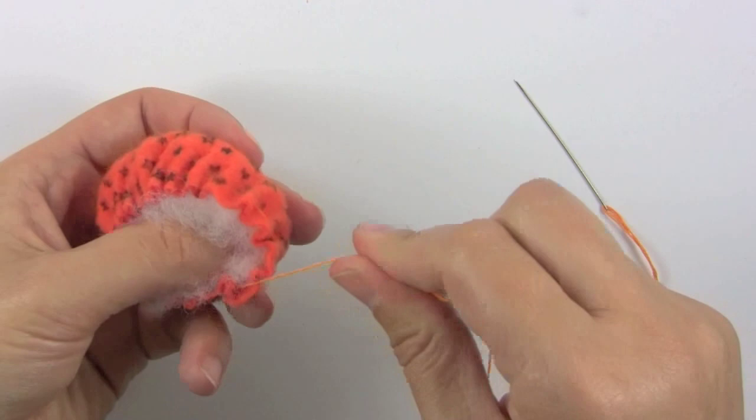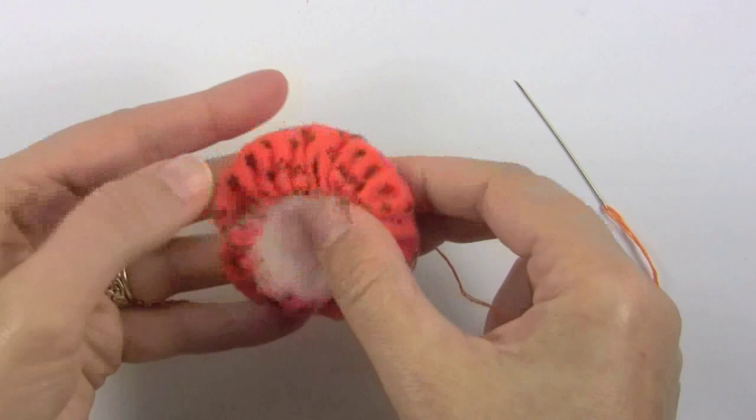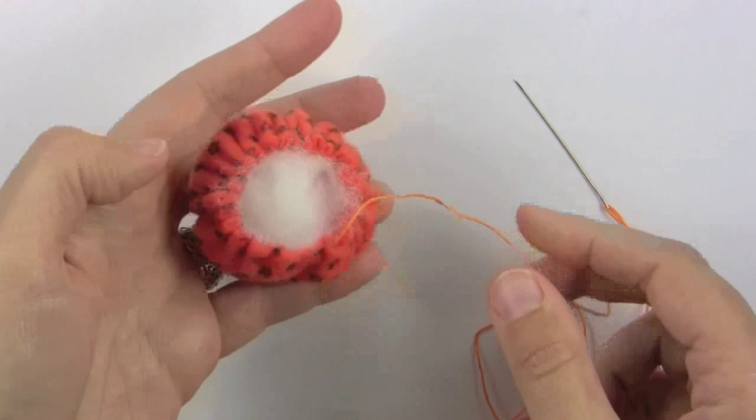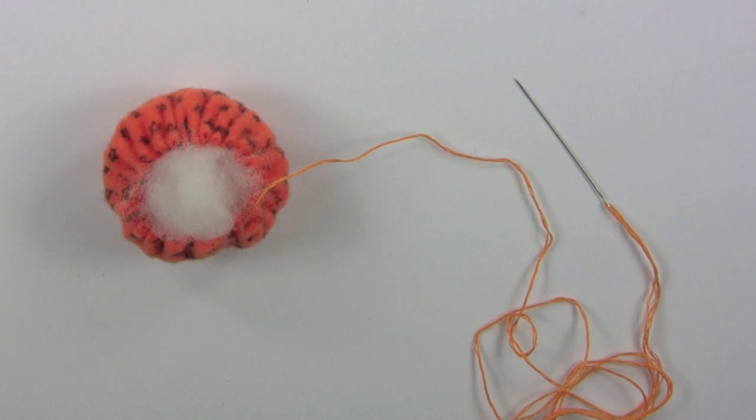What you're going to do is gently tug on the thread. I like to keep my thumb kind of pushed in there on this polyfill. I'm going to add some more in there, but you just keep filling and then gently tugging. I'm going to add just a little bit more.